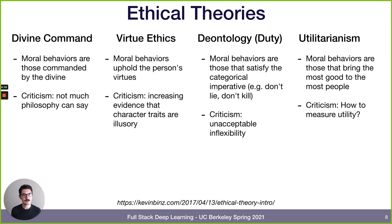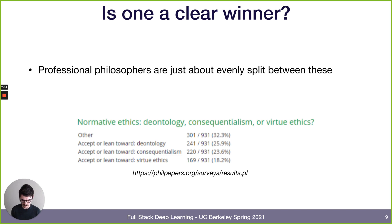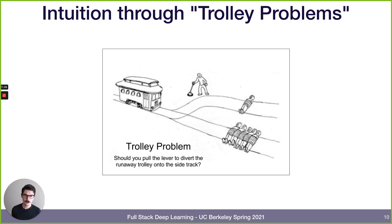Another view is utilitarianism: a behavior is moral if it brings the most good to the most people. But how do you measure 'good,' and how do you calculate good times the number of people? There's no clear winner among professional philosophers — a survey of almost a thousand philosophy professors is pretty evenly split among deontology, consequentialism, and virtue ethics. Trolley problems are often used to gain intuition about a person's ethics by presenting a moral dilemma.